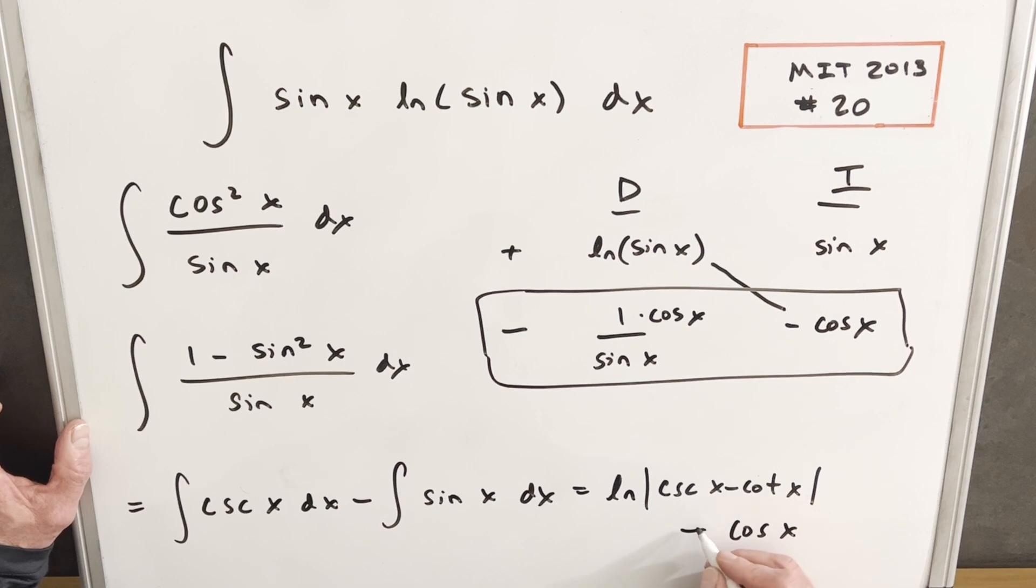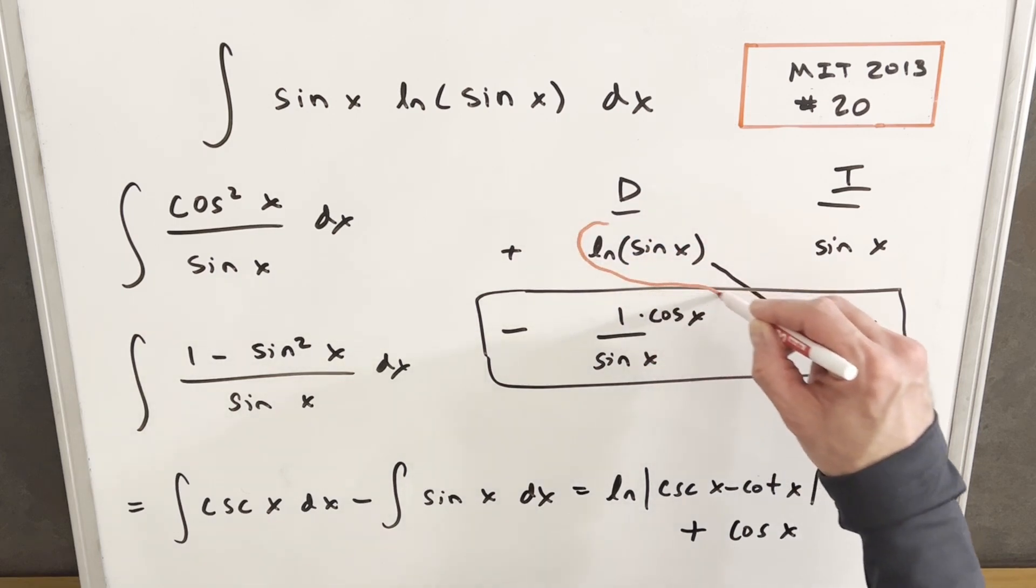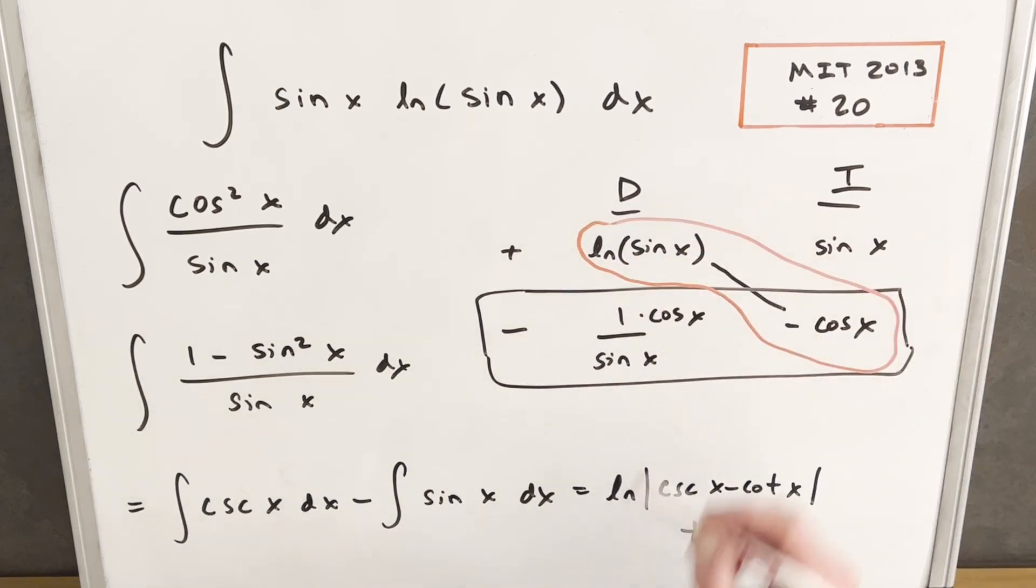So what we'll do is we'll take the minus and we'll change this to a plus. And then all we need to do is we have this part of our answer, but we also need to remember that we have this from our integration by parts table. Let me get a little more space, then we'll put this all together.